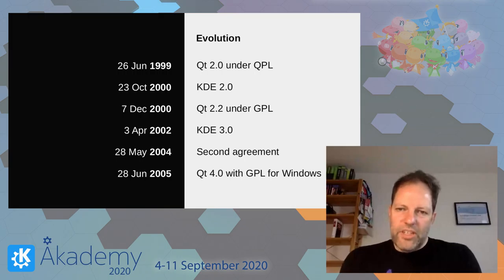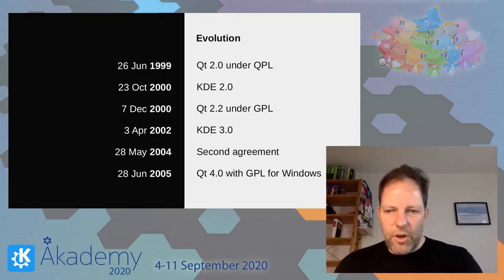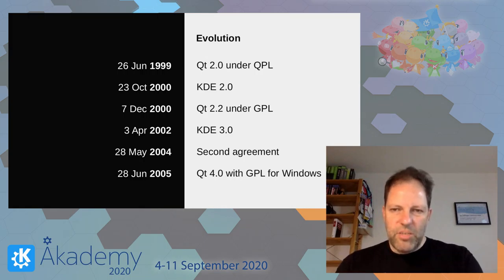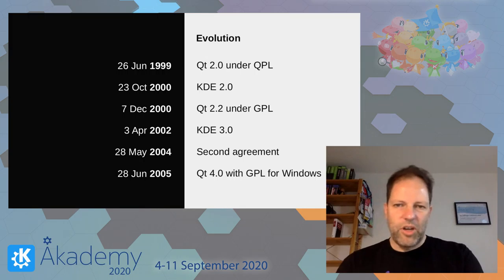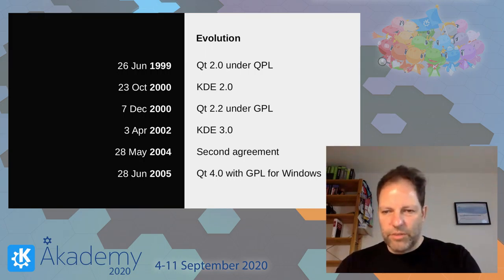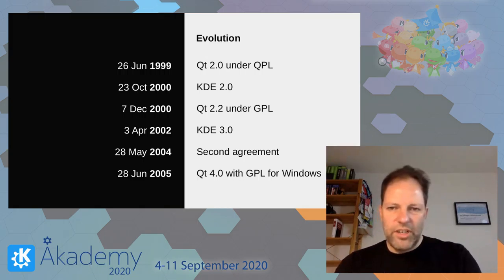And it evolved. Over time, the license of Qt also evolved. Trolltech added the QPL after some time, which was then accepted as an open source license. Later they changed it to the GPL — and that was the point in time which actually ended all the discussions about whether Qt is free software or not. KDE also evolved with major updates, and the agreement in 2004 was updated as well to reflect the change of licensing and how KDE used Qt.